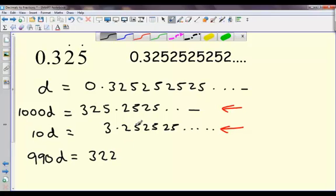But 2 take 2 is nothing, 5 take 5 is nothing, 2 take 2 is nothing, and so on. I'm just left with a nice number. Divide both sides by 990, leaves me with this fraction, 322 over 990.